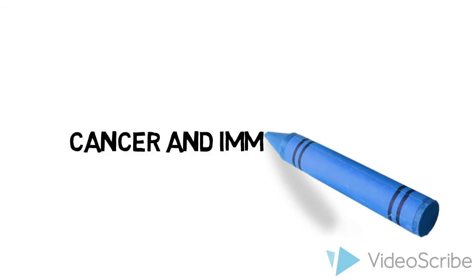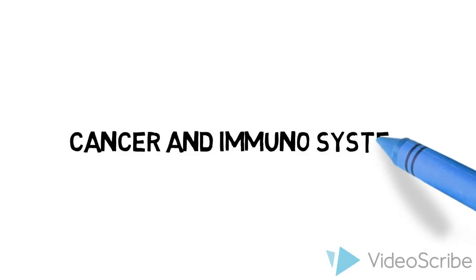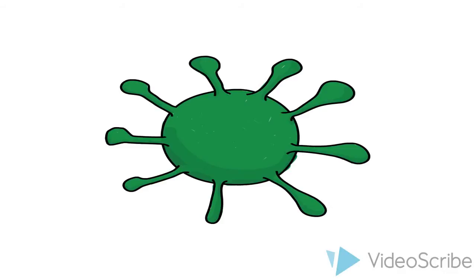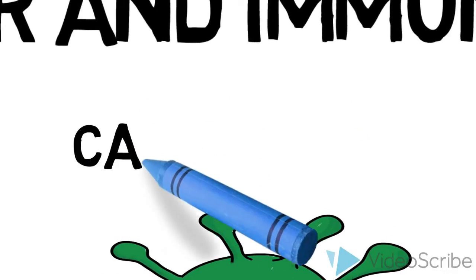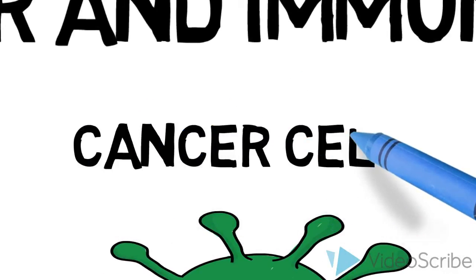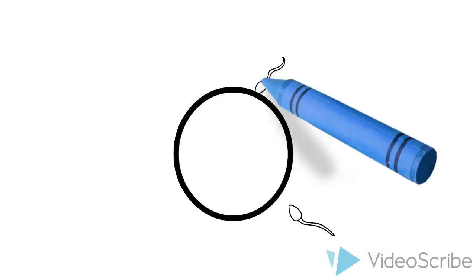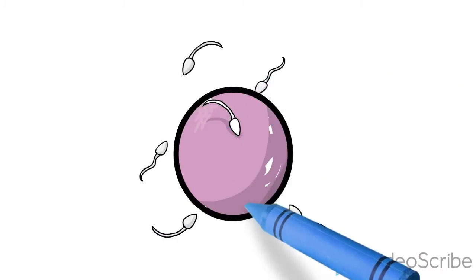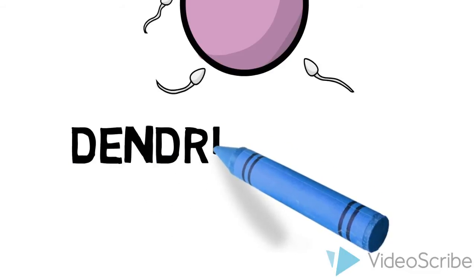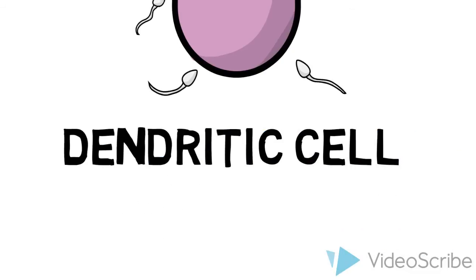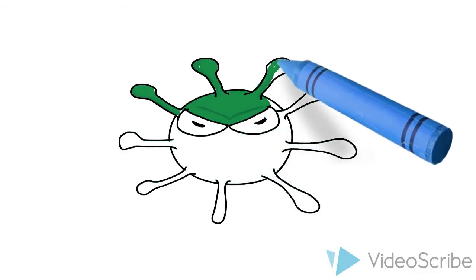Let's talk about the important components of the model cancer and immune system. There are three important components. The first is the cancer cells. And the second is the dendritic cell. And the third one is the killer cells.